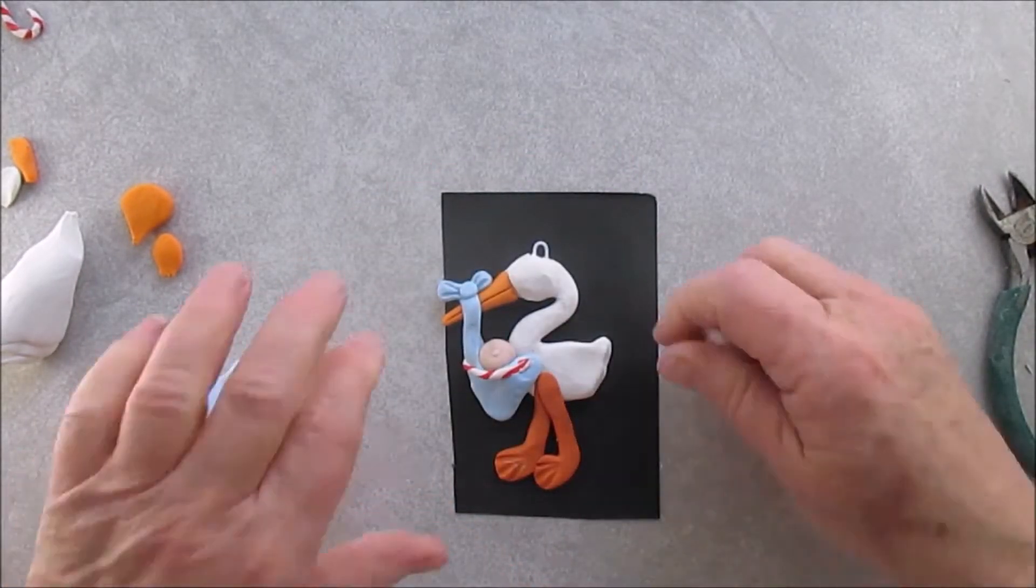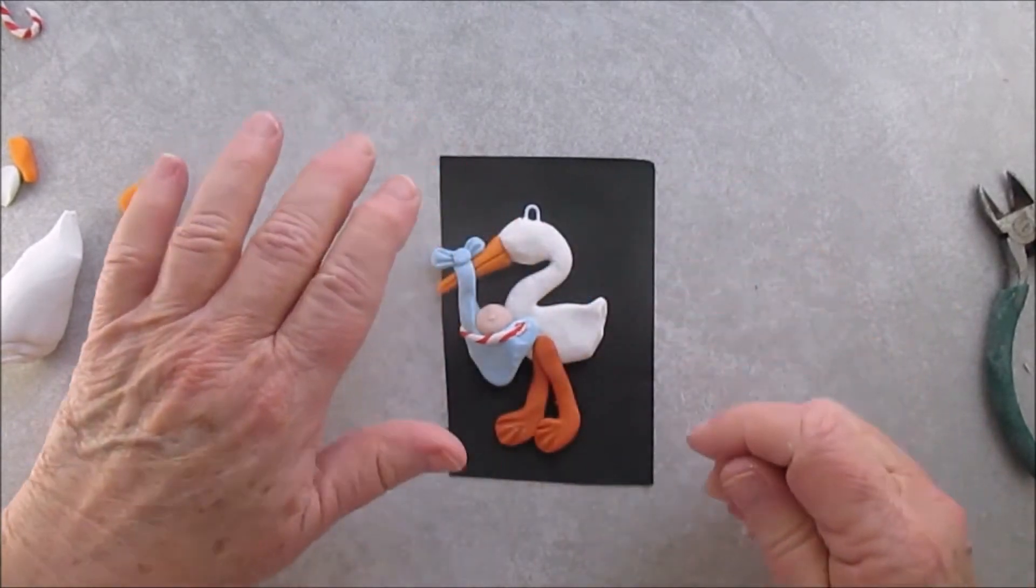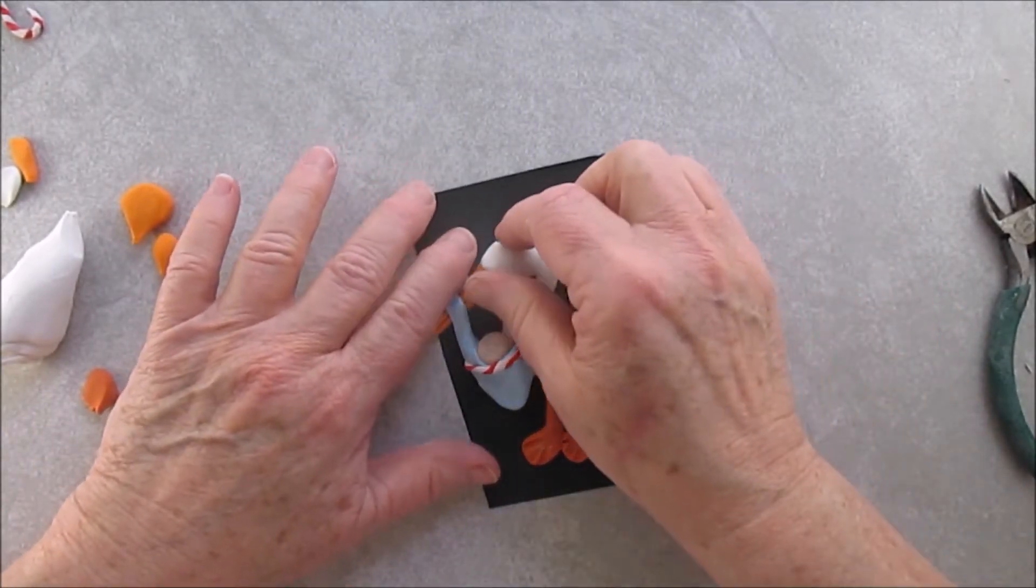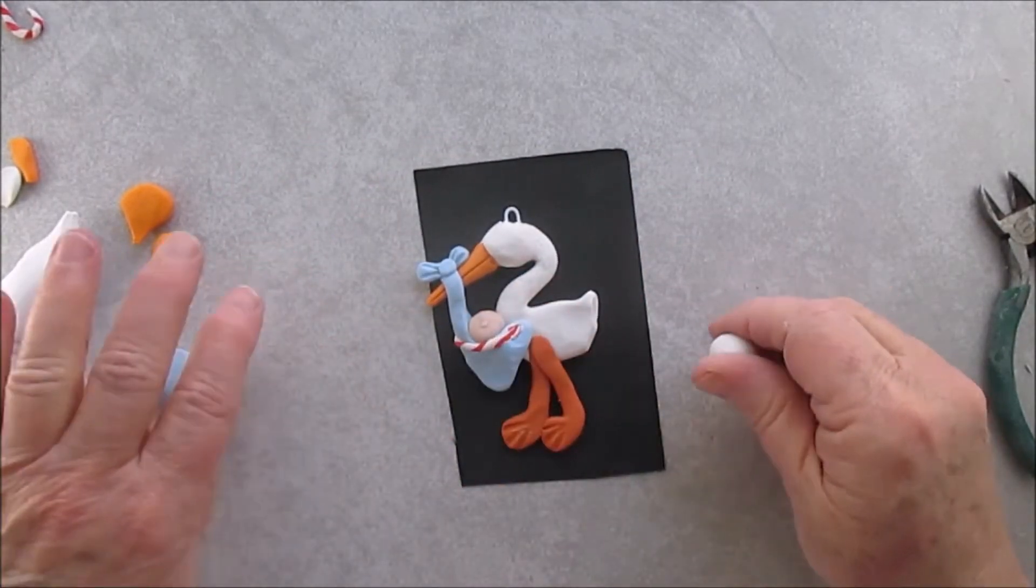Now when I make his wing, I kind of put it over the baby blanket, so it looks like he's also holding the baby with his wing.